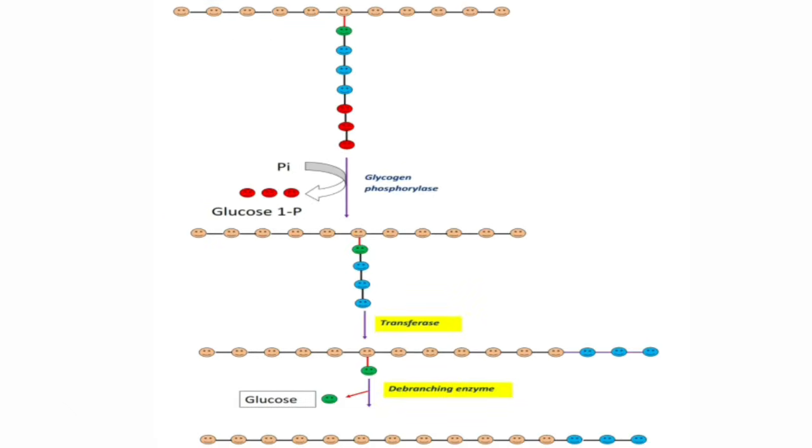Coming to reactions of glycogenolysis. In the first reaction, glycogen is acted upon by enzyme glycogen phosphorylase. This enzyme removes glucose units in the form of glucose-1-phosphate. This reaction requires phosphate. One more important thing about glycogen phosphorylase is it can remove glucose units leaving the 4 residues from the branch point. That means 4 residues from the branch point cannot be removed by glycogen phosphorylase. The remaining residues like 5th, 6th, 7th, and so on, can be removed by glycogen phosphorylase.